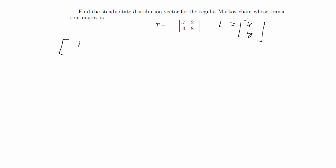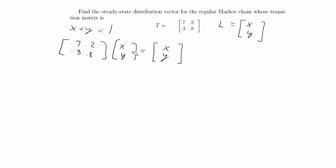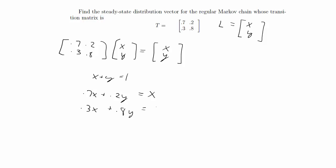So we have T, which is [0.7, 0.2; 0.3, 0.8], times [X, Y] equals [X, Y]. The other condition we know has to hold is that X plus Y has to equal 1 — the probabilities always have to sum to 1 in the steady-state distribution vector. That produces three equations: 0.7X plus 0.2Y equals X, and 0.3X plus 0.8Y equals Y.